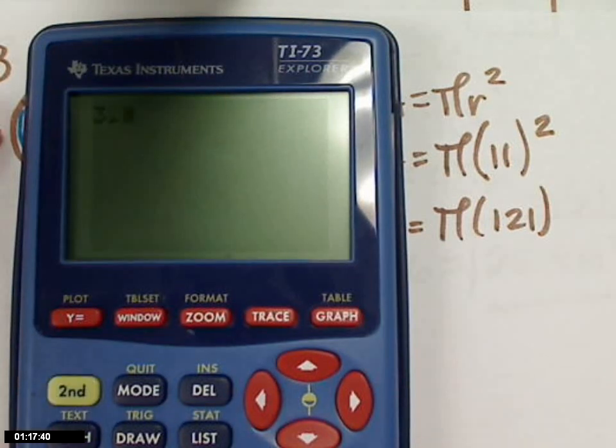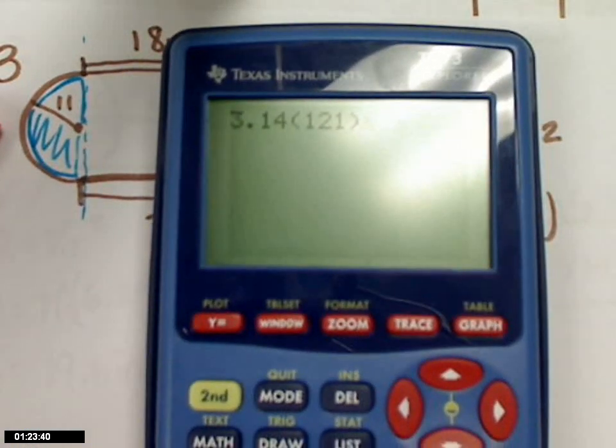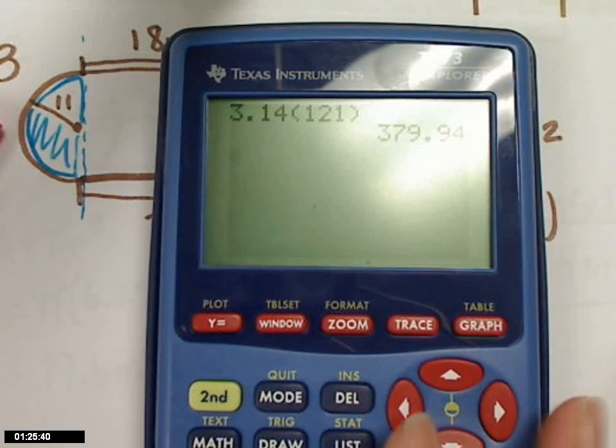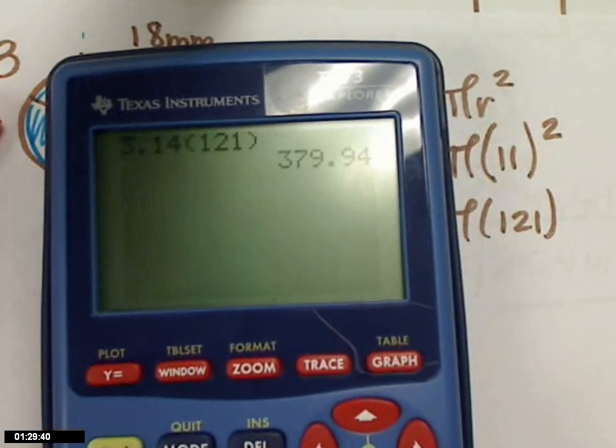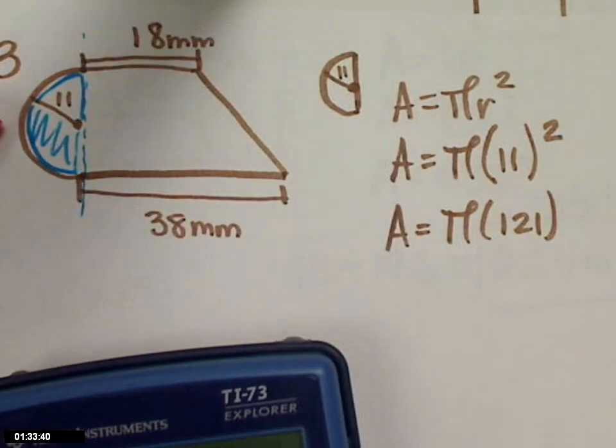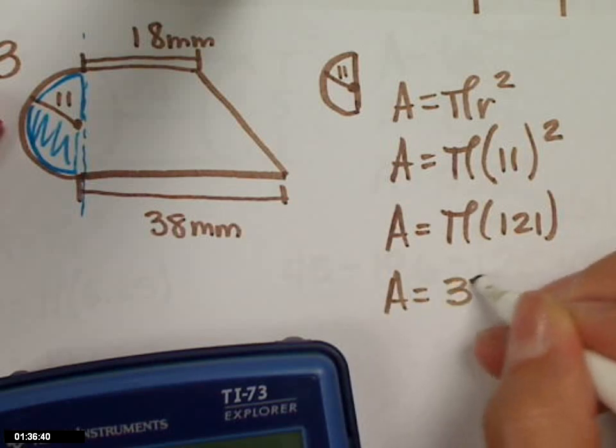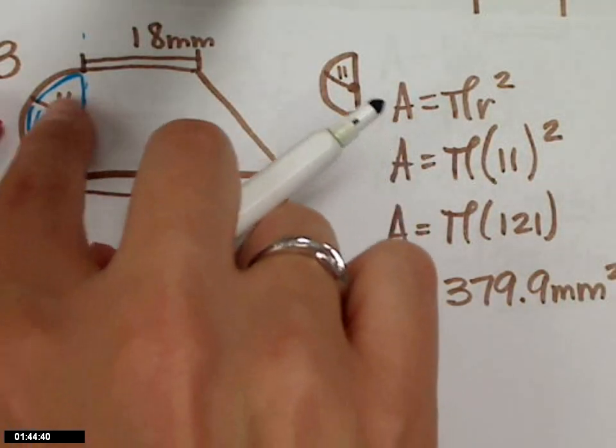And so now I have pi times 121, or 3.14 times 121. And I get 379.94. So if I'm rounding to the nearest tenth, 379.9. And what are my units? Millimeter squared. Thank you. So that's just this little area here.